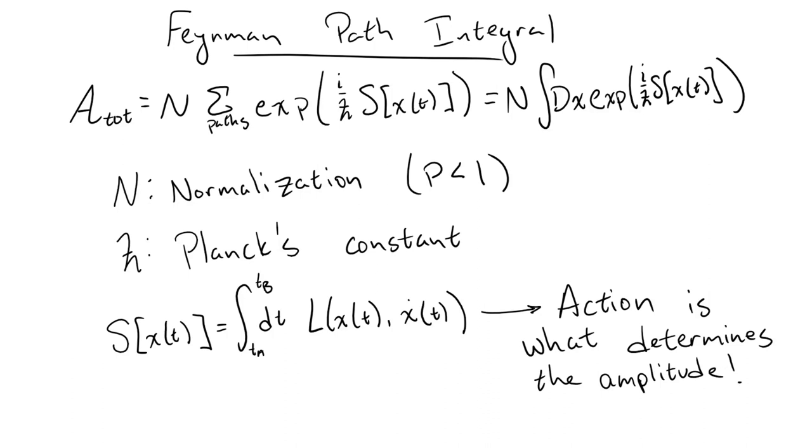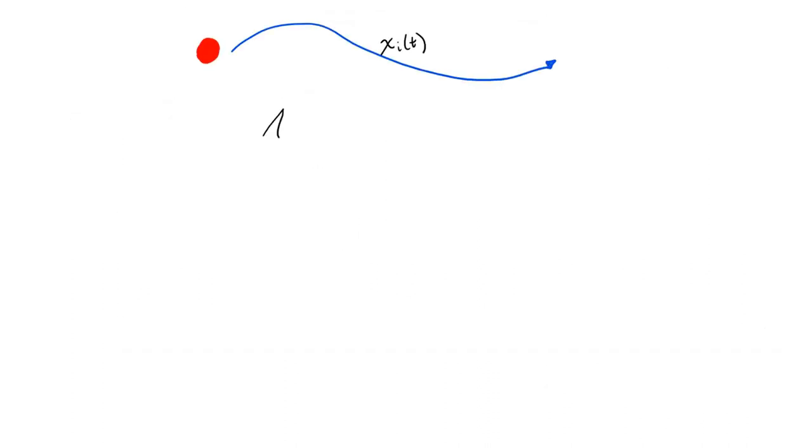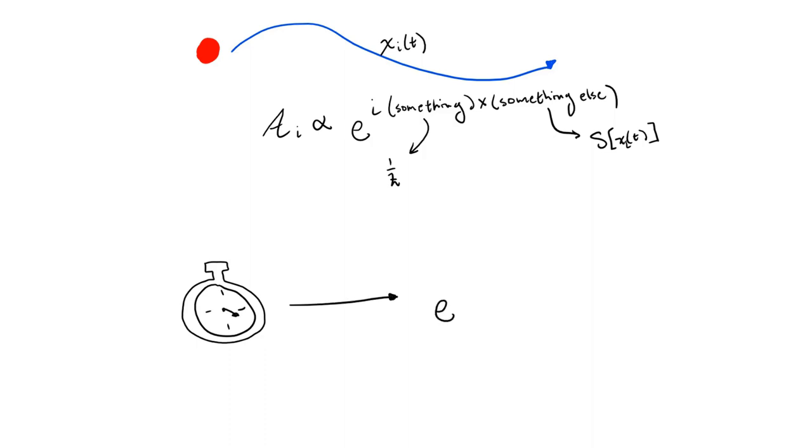So we have an answer to the first question about the physical interpretation of the Lagrangian. It's what determines the amplitude corresponding to each individual path. To answer our second question, we need to get a better idea of how to interpret these amplitudes. If we focus on just a single amplitude, we can see that it has the form e to the i something times something else. Another thing that has this form is the hand on a stopwatch, where the something is how fast the hand ticks, or the frequency, and the something else is the time elapsed.